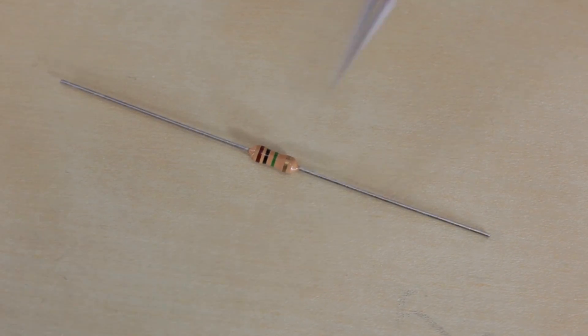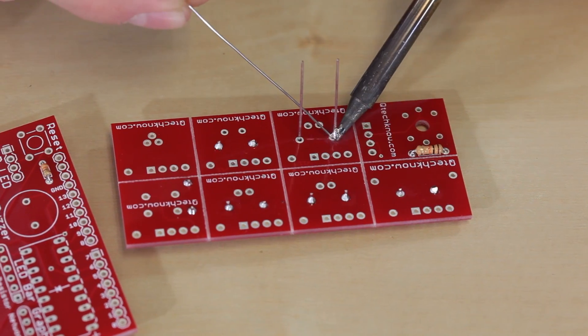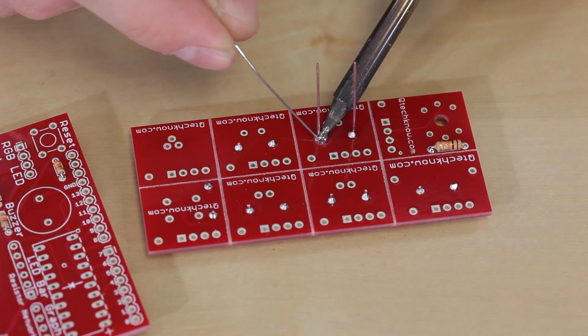The last resistor we have is the one mega-ohm. The one mega-ohm goes right here. For all the resistors, polarity doesn't matter and they can go in either way.